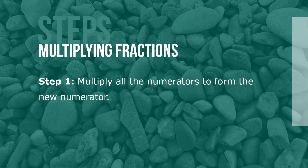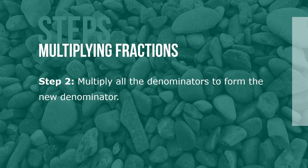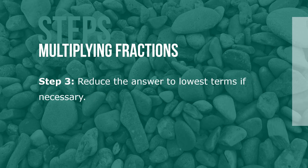Here are the steps to multiplying fractions. Step 1: Multiply all the numerators to form the new numerator. Step 2: Multiply all the denominators to form the new denominator. Step 3: Reduce the answer to lowest terms if necessary.